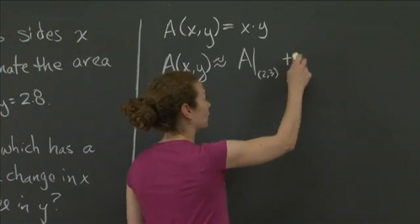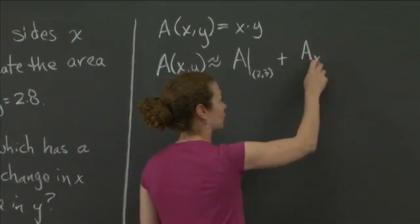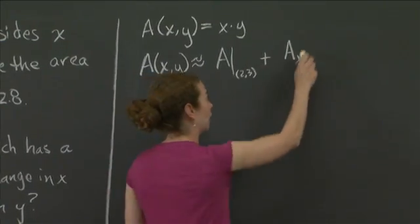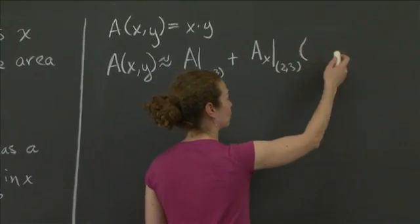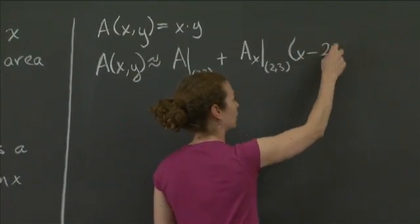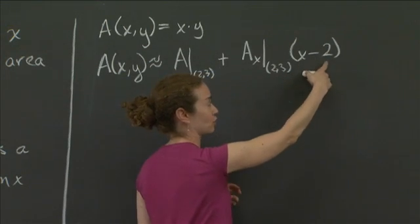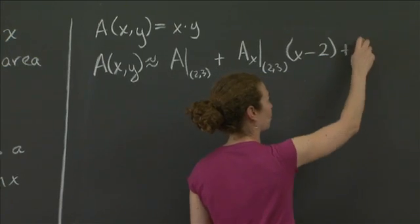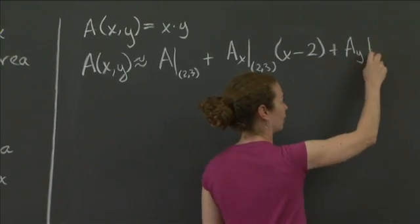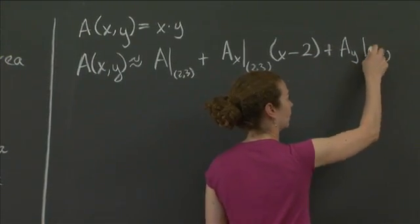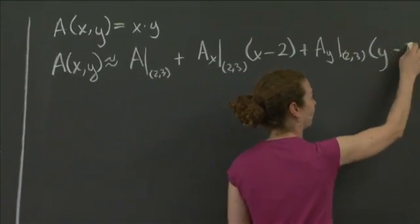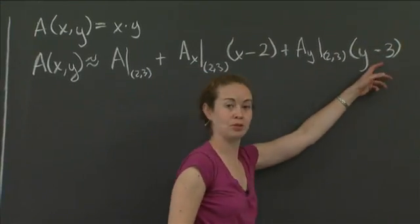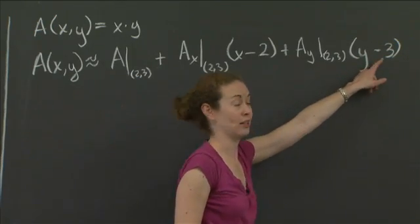plus the x derivative of area evaluated at 2 comma 3 times the change in x. And the change in x is where x is now versus where we started, which is at x equal 2. And then the same thing in terms of y. So you do the y derivative evaluated at 2 comma 3, and then you do the change in y. And since we started at y equals 3, the change in y is y minus 3.